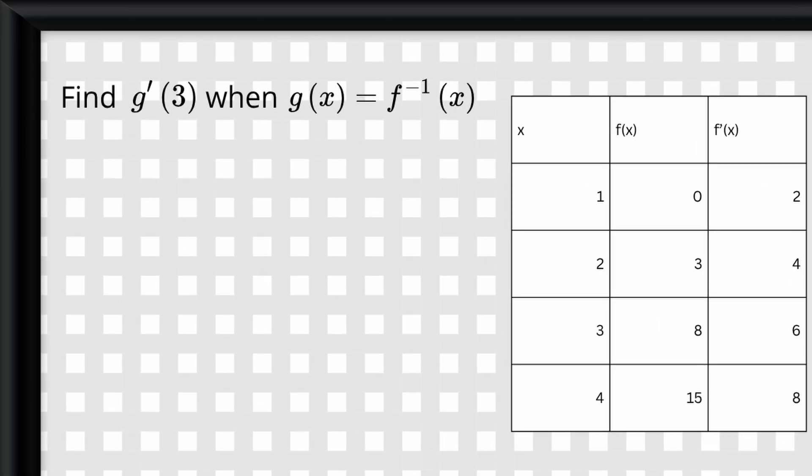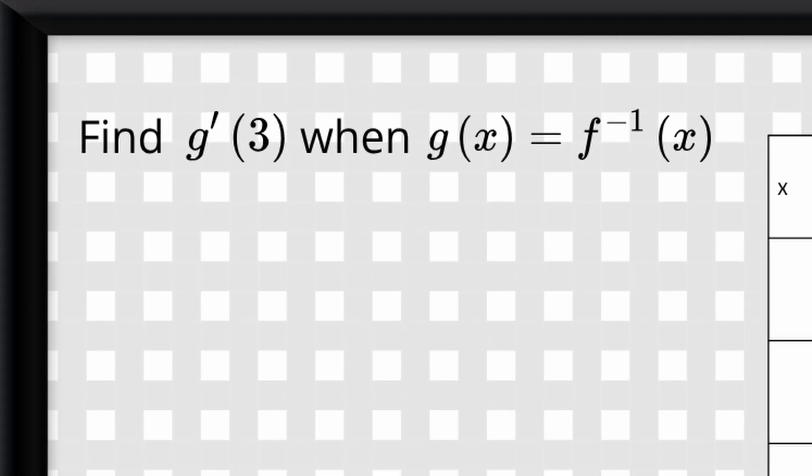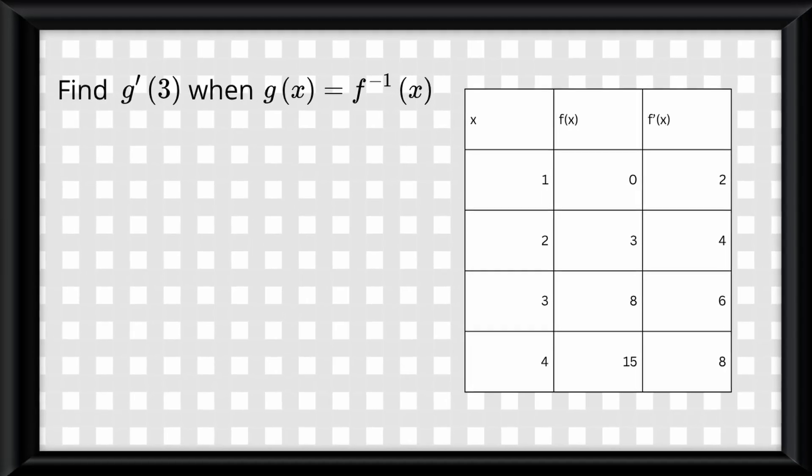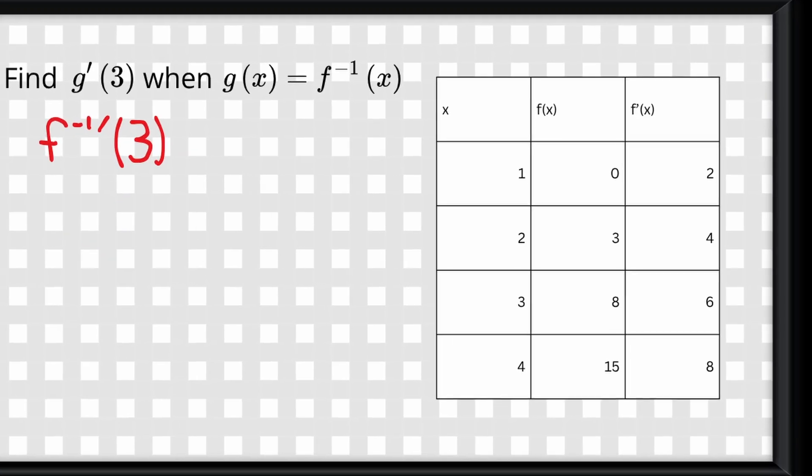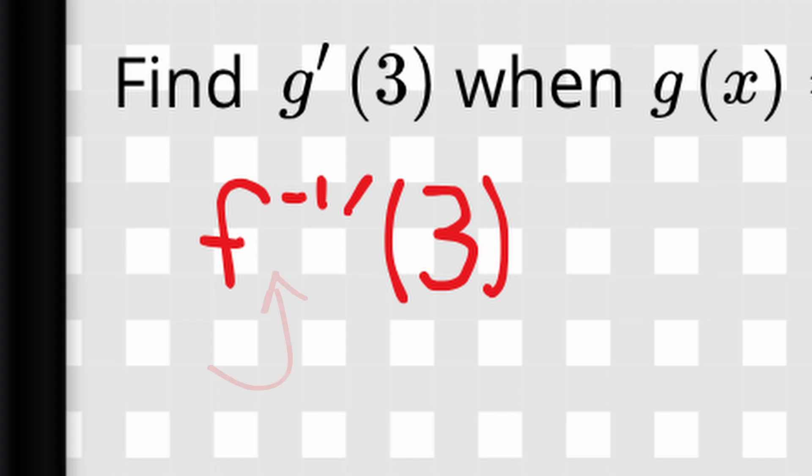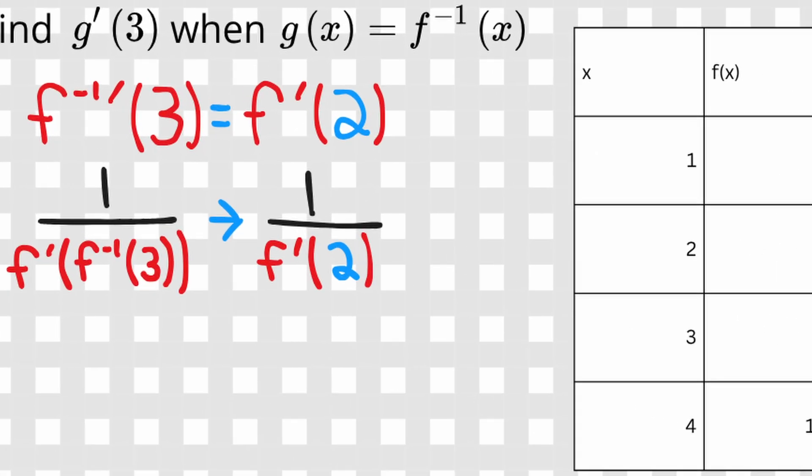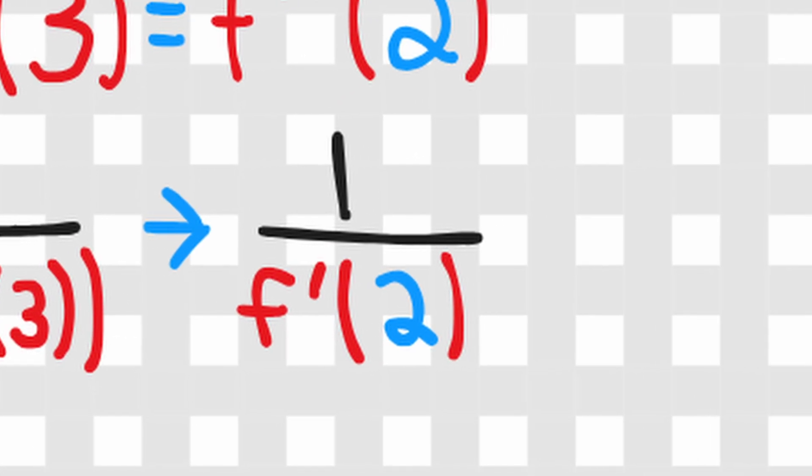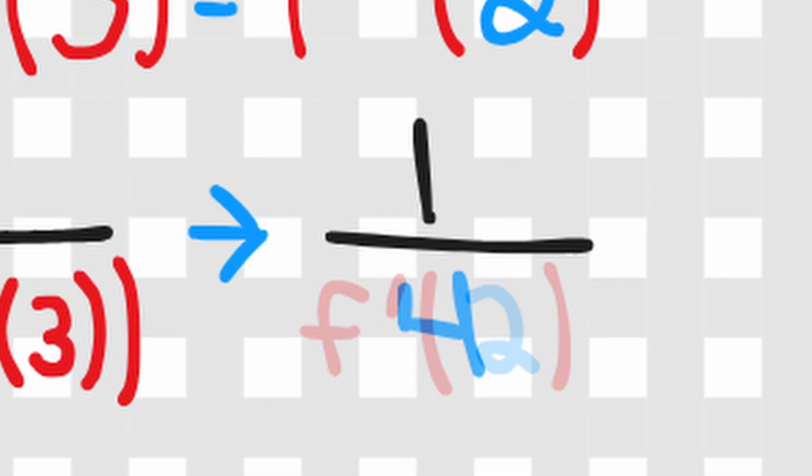We're gonna go over an example now. Take this table. Now say that a question asks us to find g prime of 3 when g of x is equal to f to the negative 1 of x. So as always, we start from the inside and go out. Since g of x is equal to f to the negative 1 of x, we can turn g prime of 3 into f to the negative 1 prime of 3. So now we have to look on the table where it equals 3. But not for x, for y. Because remember, x and y swap places for inverse functions. So the answer we get there is 2. So now we can plug that into our derivative formula, so 1 over f prime of 2. But we know f prime of 2 when x equals 2 is equal to 4, meaning the answer is 1 over 4.